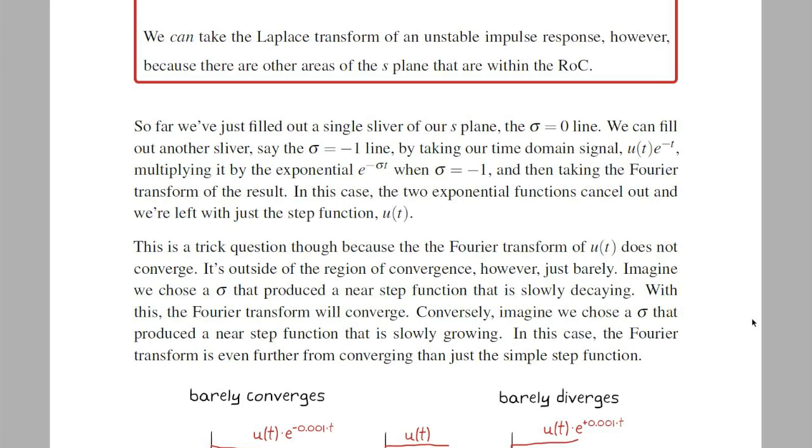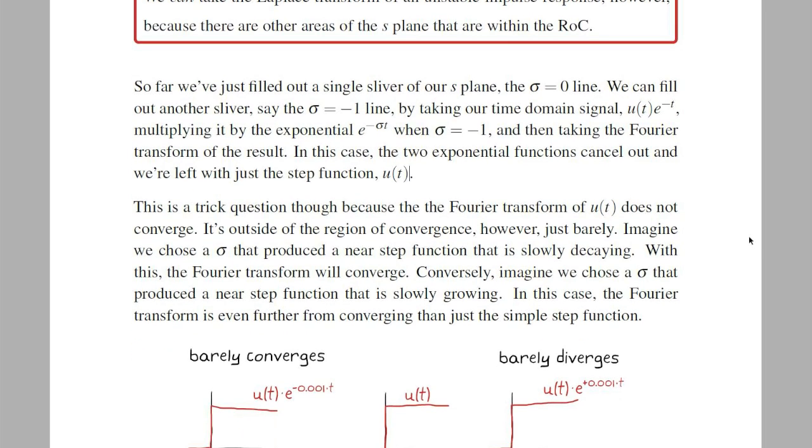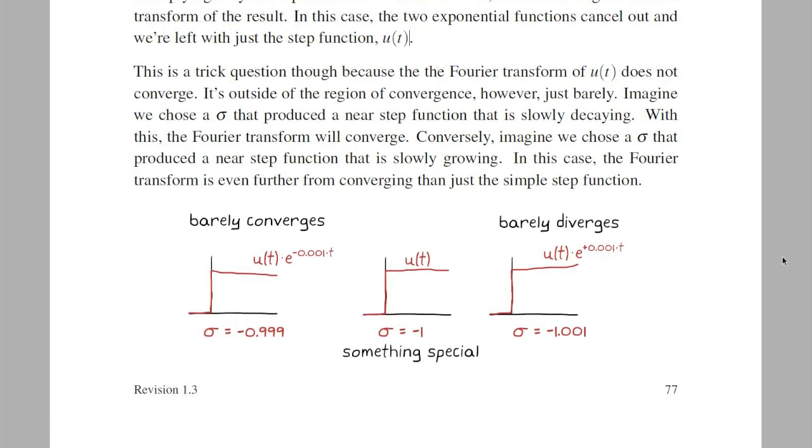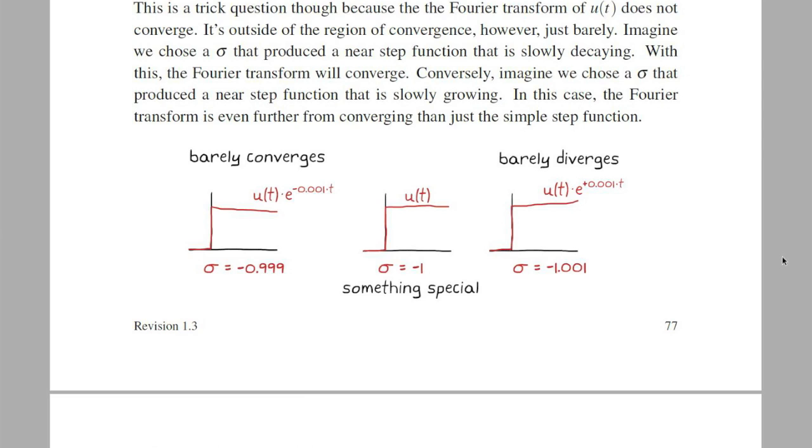Okay, let's get back to the regular section. So far we just have a single sliver of the s-plane filled out. We can fill out another sliver by choosing another sigma value, like sigma equals minus 1, and then multiply our time function by e to the t, and take the Fourier transform of the result. But e to the t cancels out the exponential in the original function, which was e to the minus t, and we're just left with a step function u(t). Now this is a bit of a trick question here because the Fourier transform for a step function is not inside the region of convergence, but it's just barely not inside.